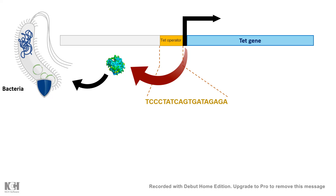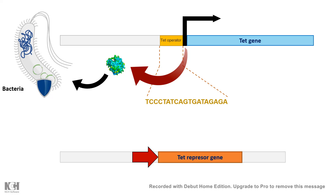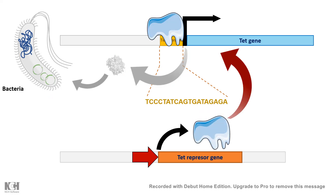When there is no antibiotic in the environment, a repressor protein is produced from a repressor gene present in the same bacteria. That repressor sits on the tet operator and represses the tet gene or tet operon system, because at that point the bacteria don't need any resistance protein. Making that protein would be a waste of energy. But when antibiotic is present in the environment, the bacteria will produce the tet gene products that allow it to gain resistance.